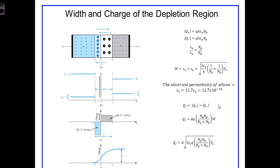Before we can derive expressions for the current and voltage relationships in a p-n junction when an external voltage is applied, we need to look first at the width and the charge stored in the depletion region at equilibrium with no external voltages applied. As we do this, we look at the more generalized and more common case of different doping concentrations in the two regions.